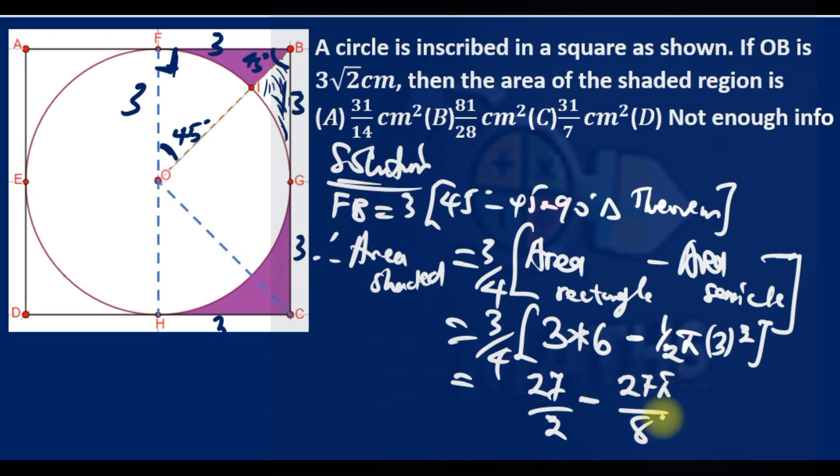Minus, so this is now 9, 9 times 27... π/8. Well, we don't have something like that, so meaning they substituted π as 22/7. So I have 27/2 minus (27 times 22/7)/8.